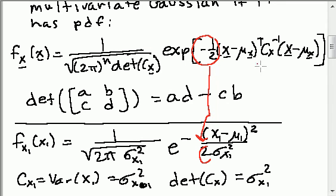This Cx inverse is what's giving us this σ x1 squared in the bottom here, because when I take the inverse of σ x1 squared, I just get 1 over σ x1 squared.